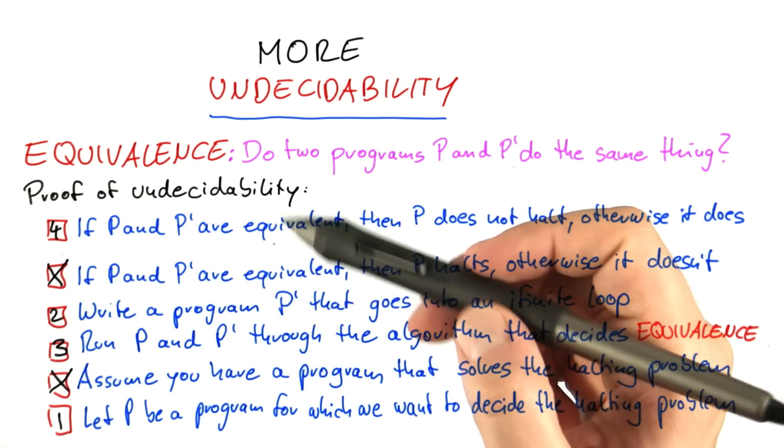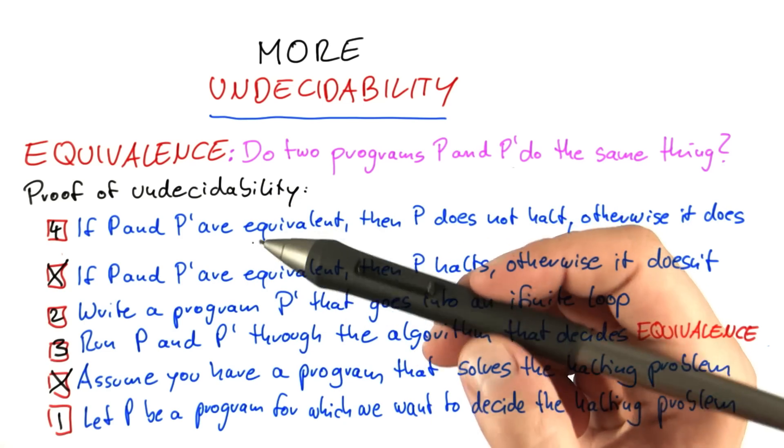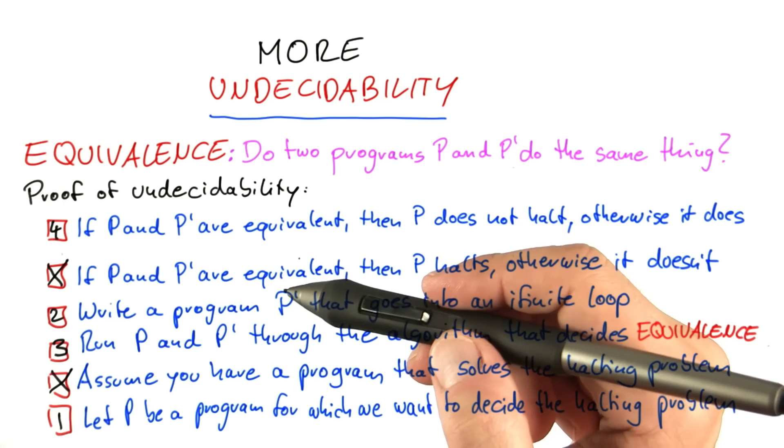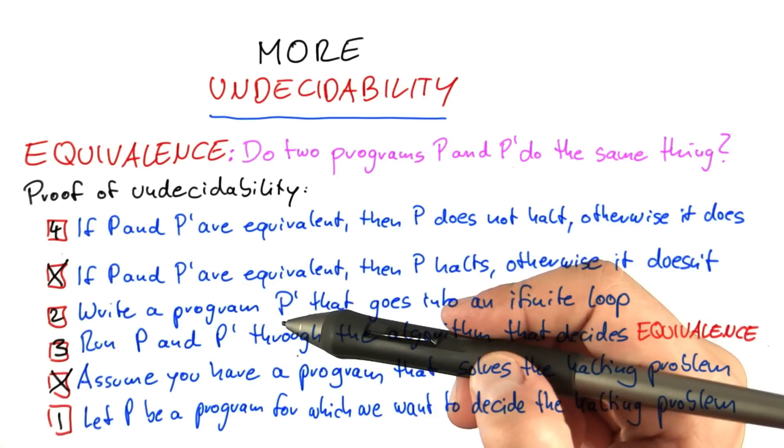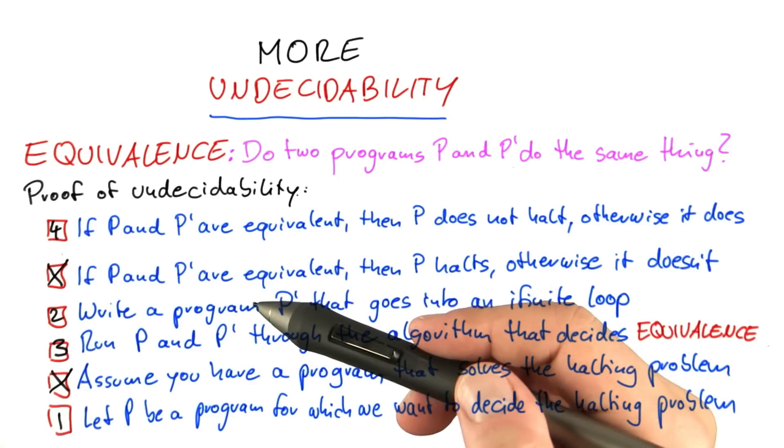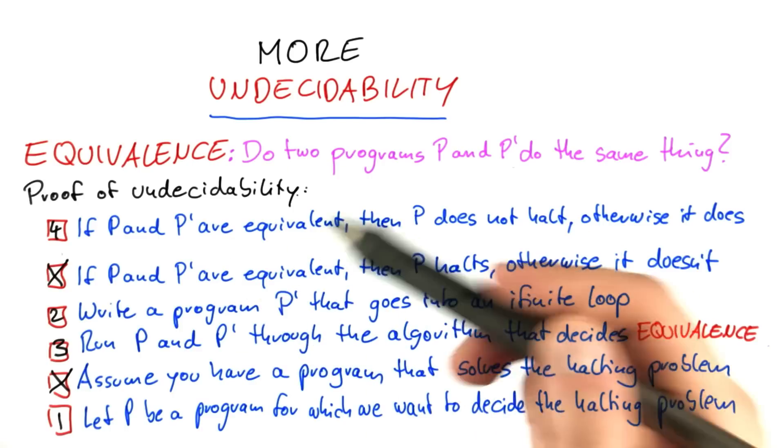Now, this was certainly one of the tougher quizzes in this course. So congratulations for figuring it out. But of course, I also trust that by now you have learned the ropes of theoretical computer science. Your reward here is that I will give you a third proof of undecidability for free.